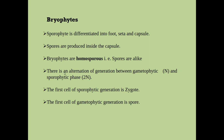There is an alternation of generation between gametophytic, that is haploid plant, and sporophytic, that is diploid plant. The first cell of the sporophytic generation is the zygote, and the first cell of the gametophytic generation is the spore.